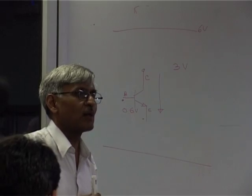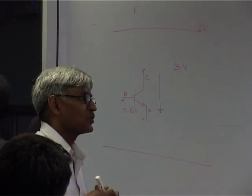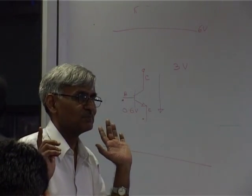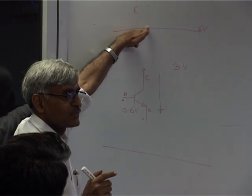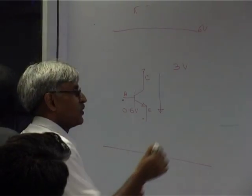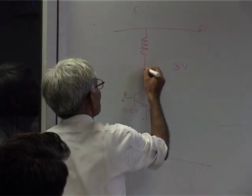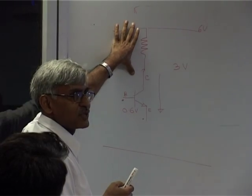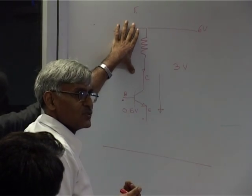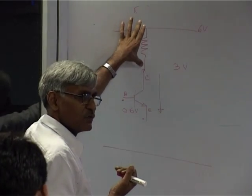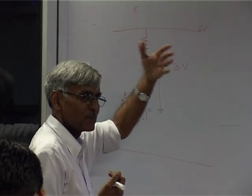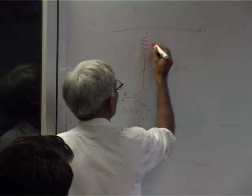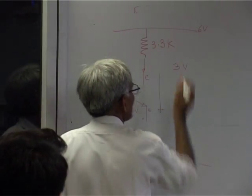We already know that 1 milliampere of current should be flowing through this transistor for good amplification. The first calculation: this point is at 6 volts, this point is at 3 volts, so we want to drop 3 volts. What should be the collector resistor RC? Resistance equals voltage divided by current — 3 volts divided by 1 milliamp gives about 3 kilohms. Since resistors come in discrete values and not all values are available, the closest value is 3.3 kilohms, which is why we have chosen 3.3 kilohms.